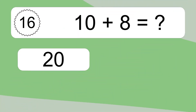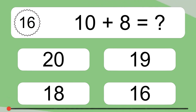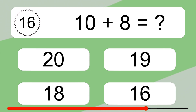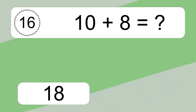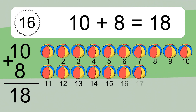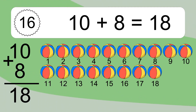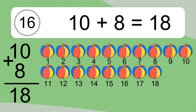10 plus 8 equals what? 10 plus 8 equals 18. Let's count it: 1, 2, 3, 4, 5, 6, 7, 8, 9, 10, 11, 12, 13, 14, 15, 16, 17, 18.